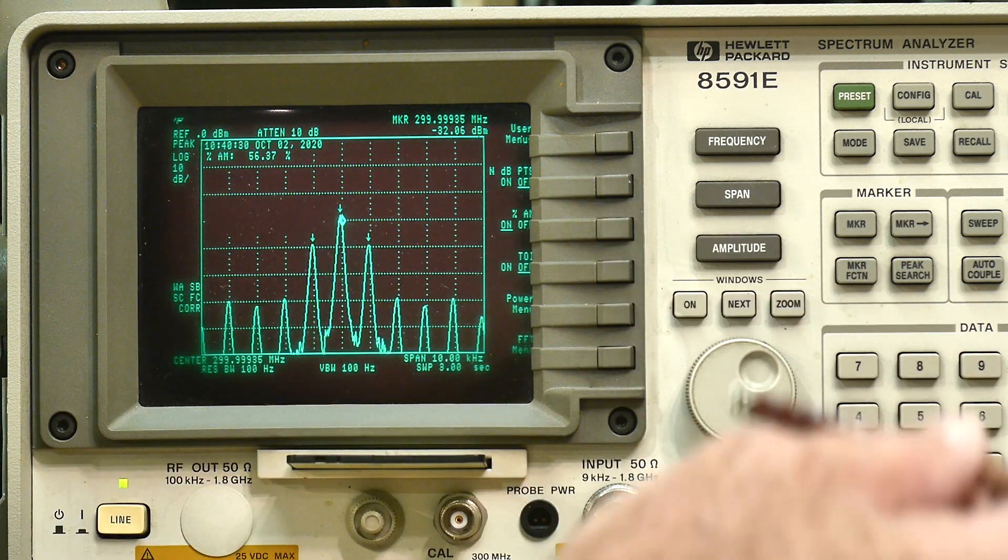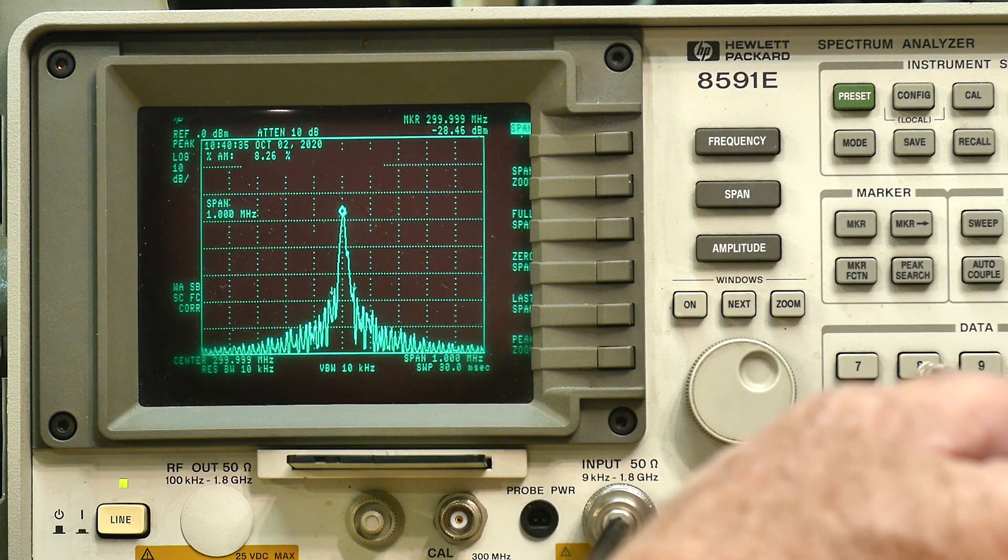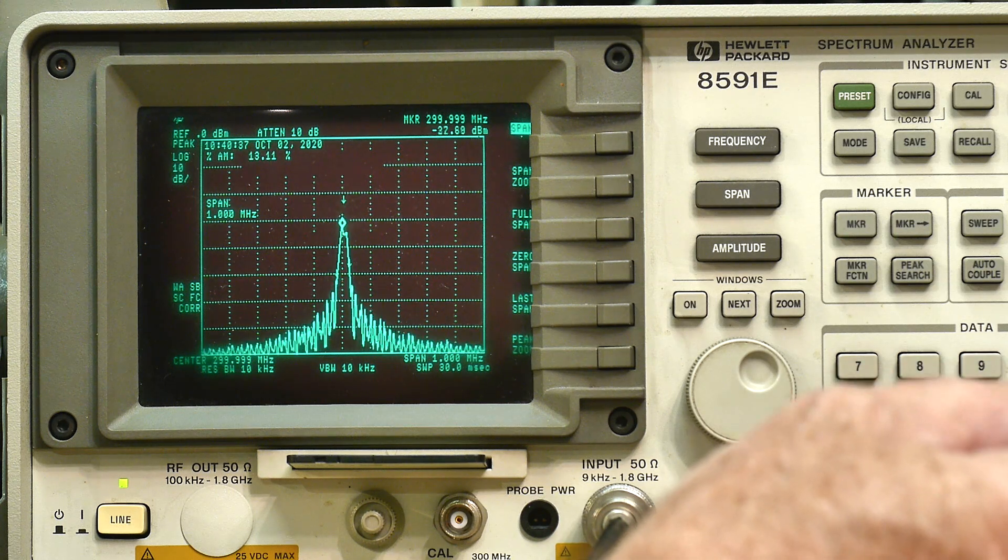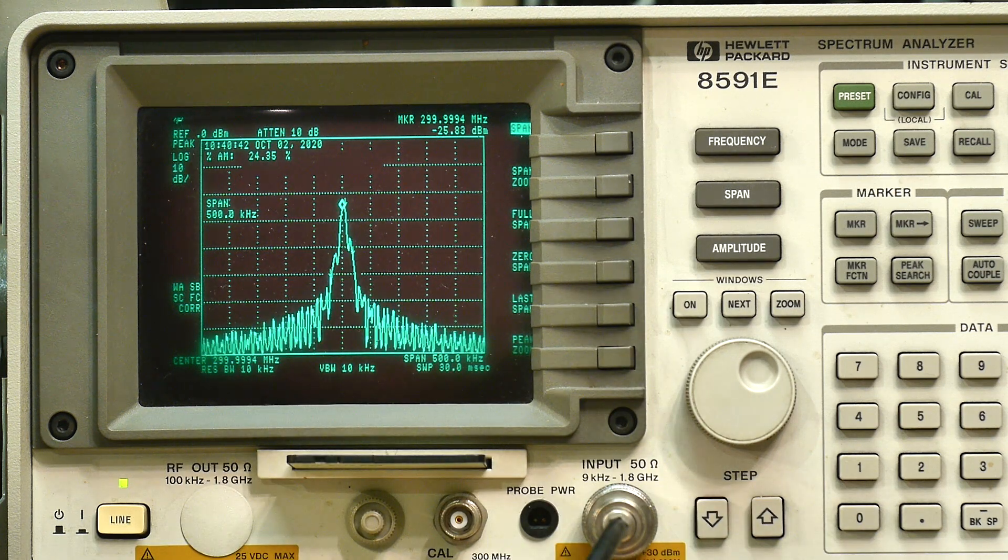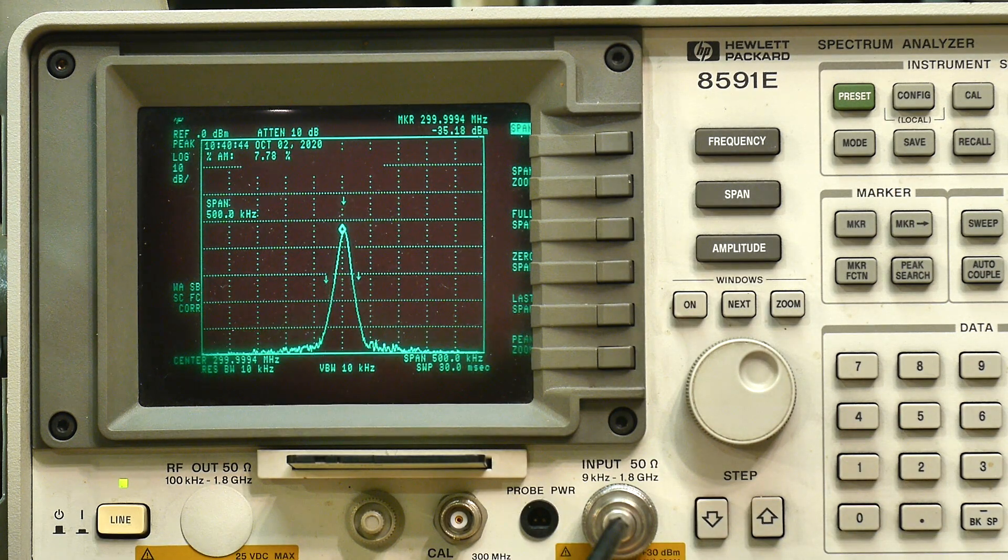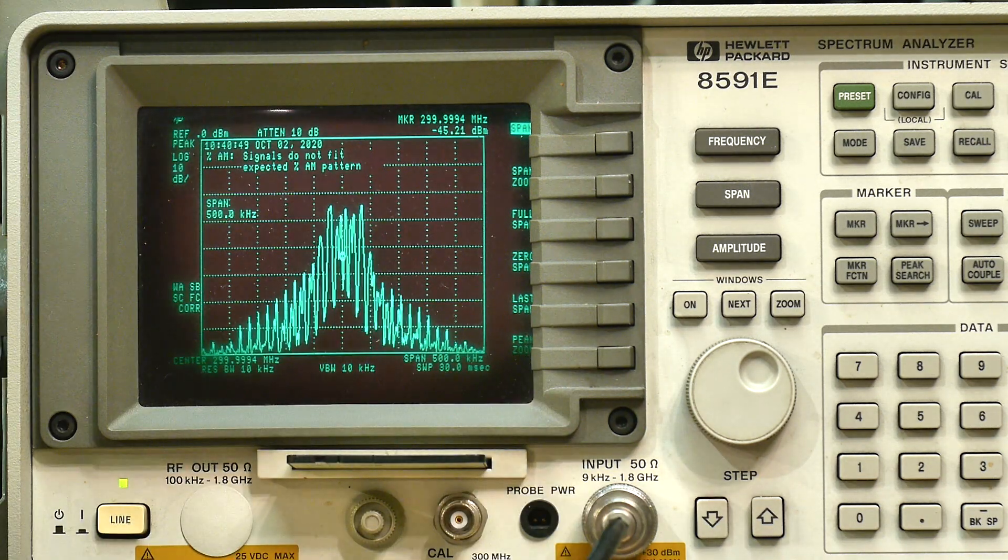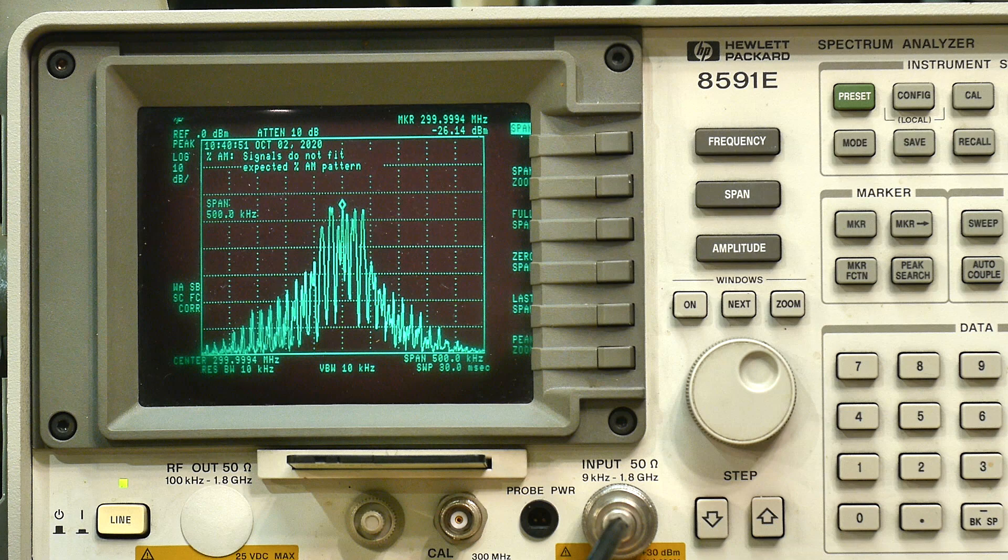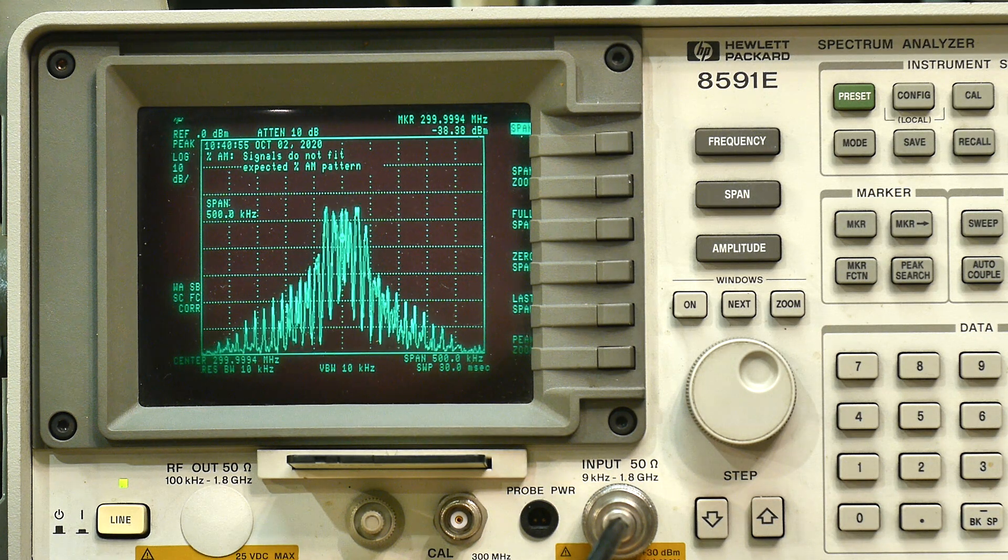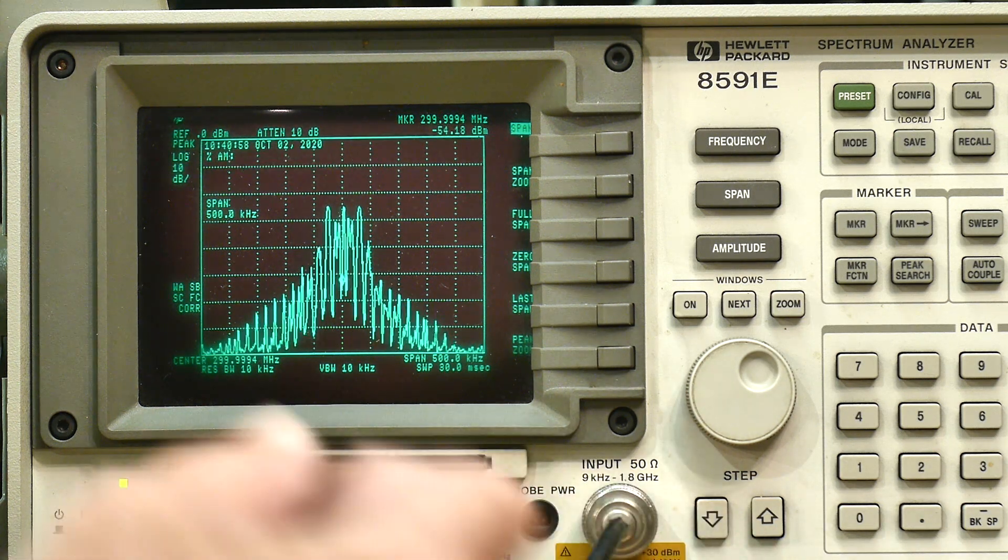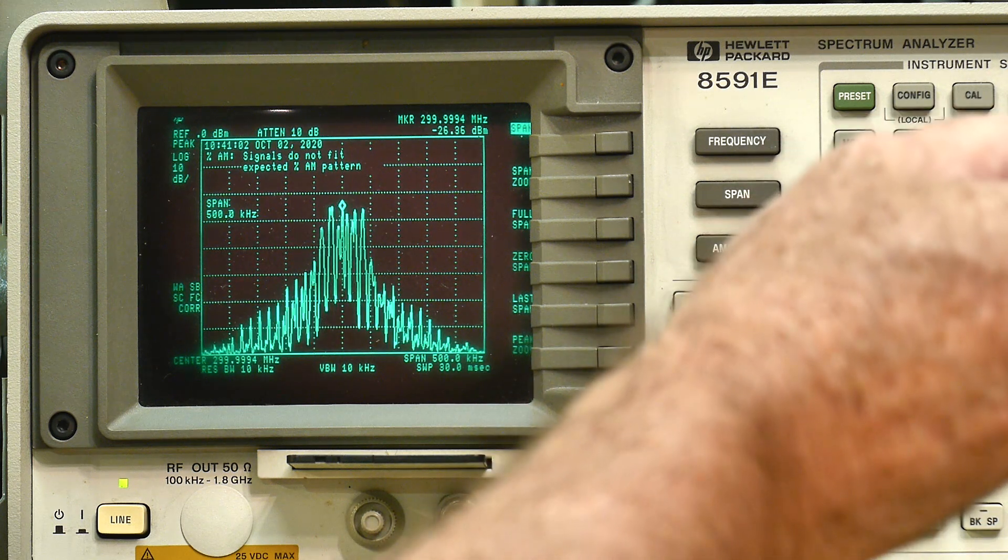All right, so let's go back out. Let's do span of half a megahertz. Let's go to the tiny SA and turn on wideband FM. So there's some wideband FM and it's very messy - FM is always messy.